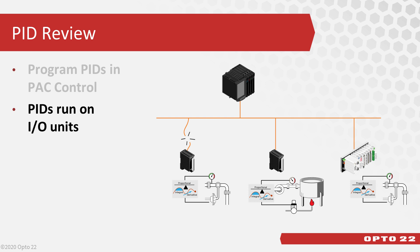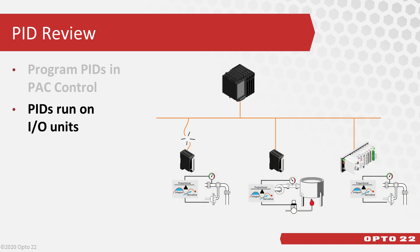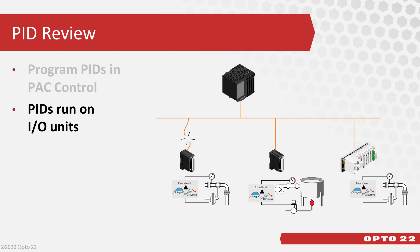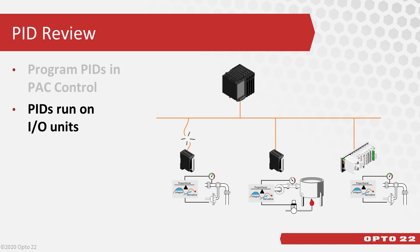Where you can see how that makes a difference is when you have remote IO units running PIDs. If communication to the controller is interrupted, like we see on the first IO unit, the PIDs on the remote unit keep running until the unit is powered off. You can have up to 96 PIDs running on Groove Epic IO and SnapPak IO units, and up to 4 PIDs on Groove Rio units.